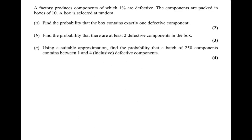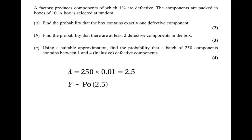Part C asks us to use a suitable approximation to find the probability that in a batch of 250 components, between one and four are defective. We use the Poisson distribution to approximate the binomial. The expected number of defective components is lambda equals 250 times 0.01, giving 2.5. So Y will have the Poisson distribution with parameter 2.5.